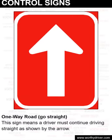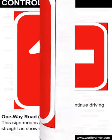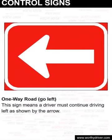One way road, go straight. This sign means a driver must continue driving straight, as shown by the arrow. One way road, go left. This sign means a driver must continue driving left, as shown by the arrow.